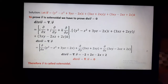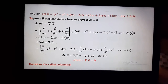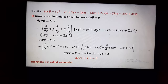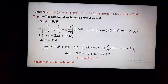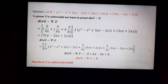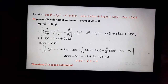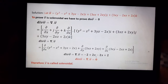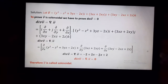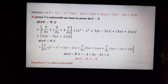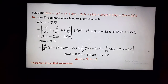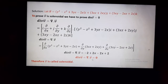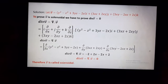Differentiating the first term partially with respect to x, the second with respect to y, and the third with respect to z, we get −2 + 2x + 2 − 2x + 2. Wait — simplifying: −2 + 2 + 2x − 2x + 2 equals zero. Therefore divergence of V equals zero.